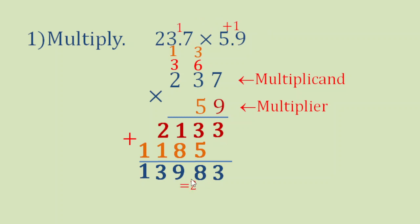Now we will just add 1 decimal place here and 1 decimal place here equals 2 decimal places. Meaning to say we are going to put our decimal point here between 9 and 8. That means 2 decimal places. So our answer is 139.83.